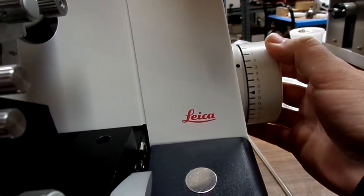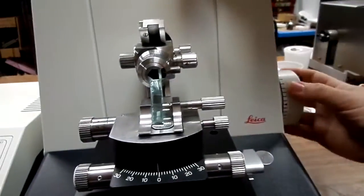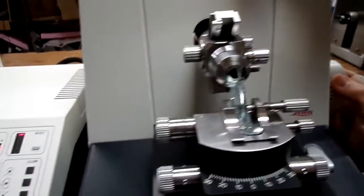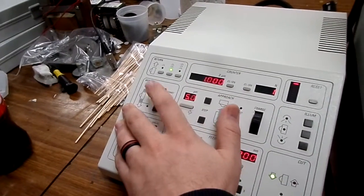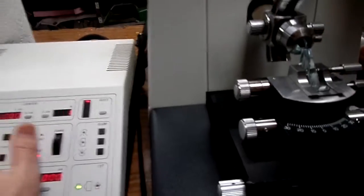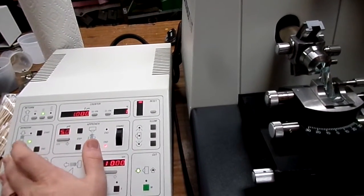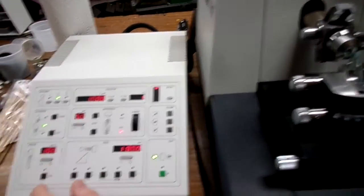So you would watch the specimen as you're turning your hand wheel, and you'd get to the bottom of the specimen. Then you would hit your cutting window start button. Then you would go to the top of the specimen and hit your end button.